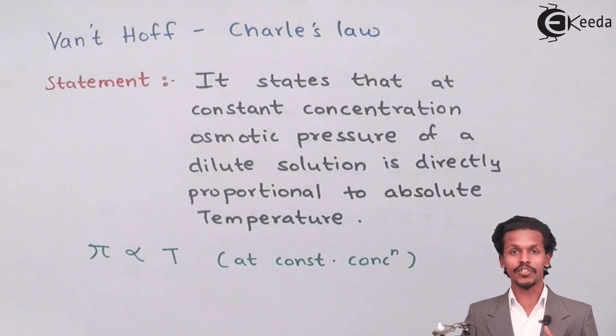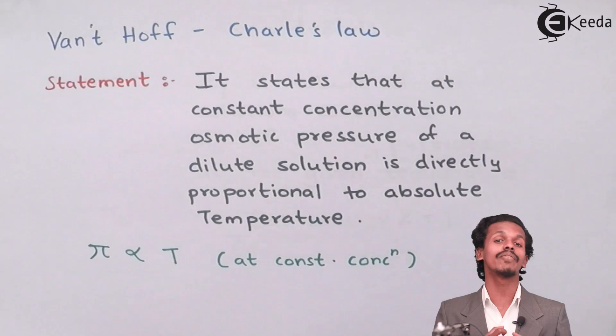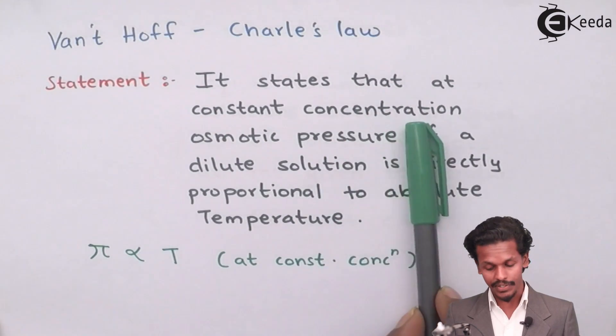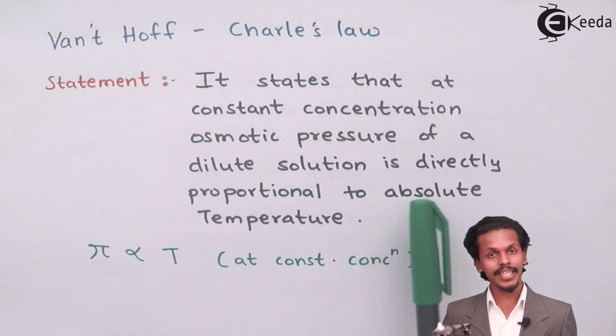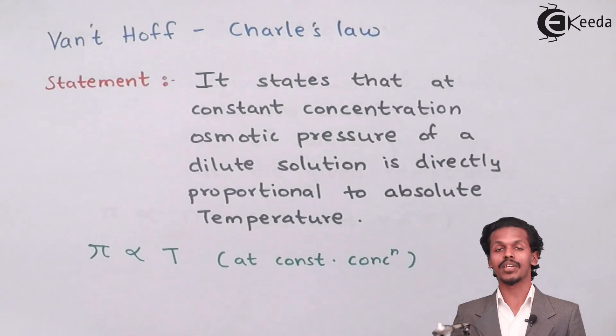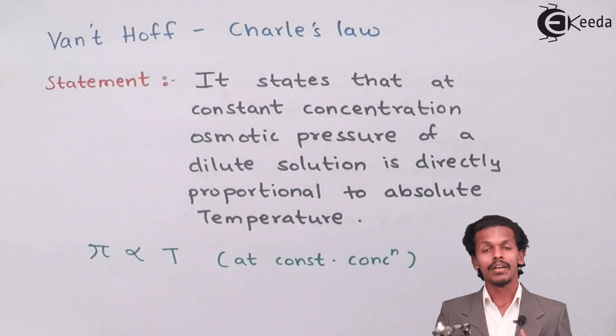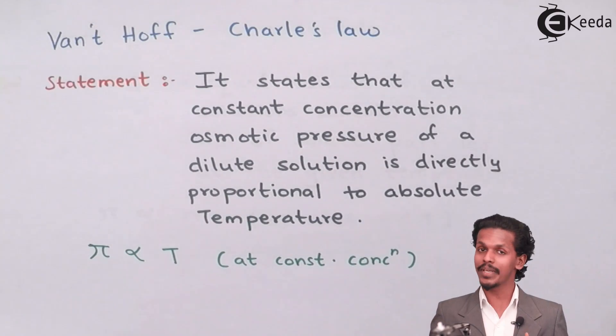Now the next is van't Hoff-Charles law. It is very similar to Charles law. But in this case, only osmotic pressure is there and hence we have to evaluate this definition in that format. So it states that at constant concentration, osmotic pressure, that is π, of a dilute solution is directly proportional to the absolute temperature, which means osmotic pressure is directly proportional to the temperature at constant concentration.